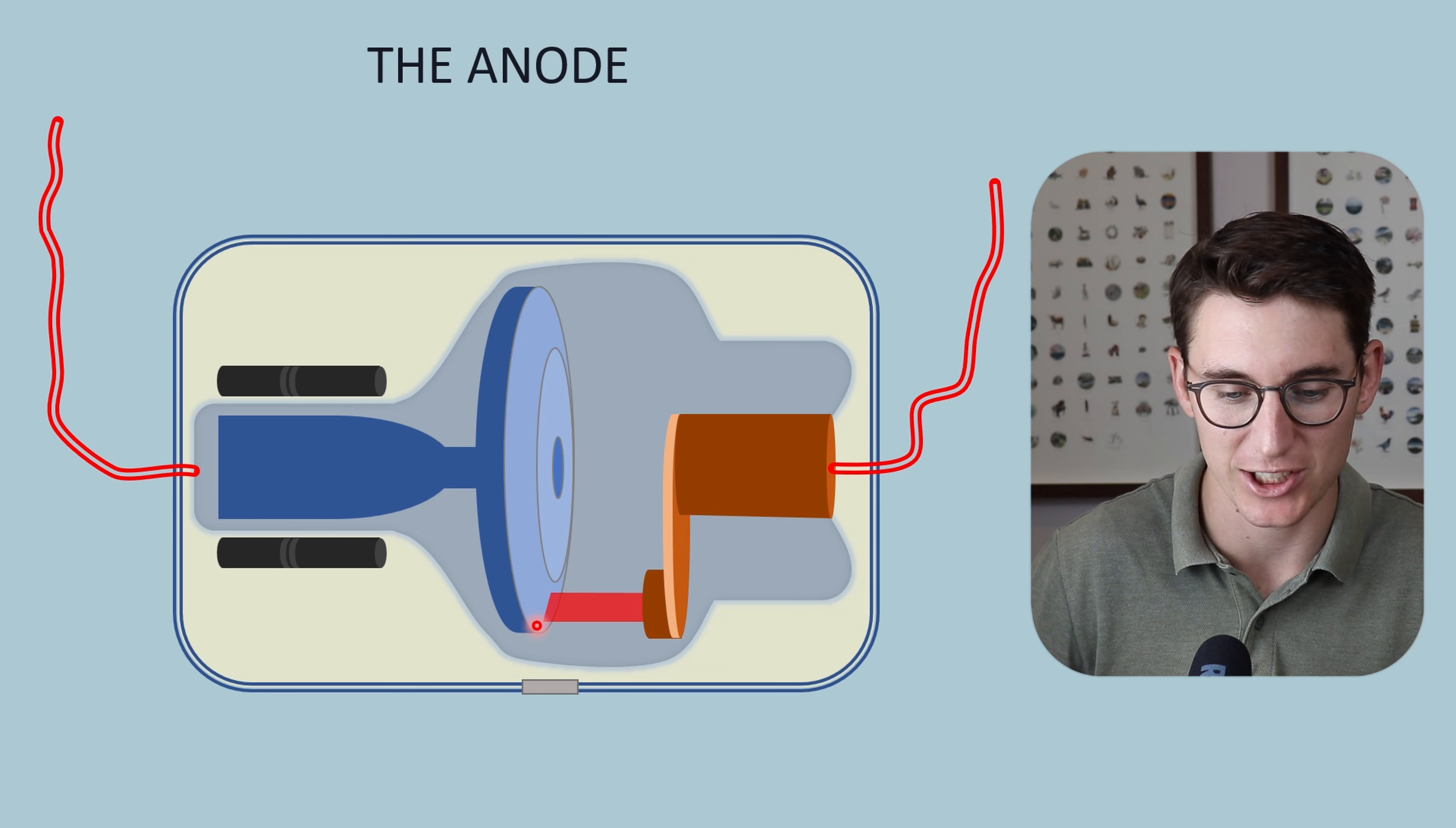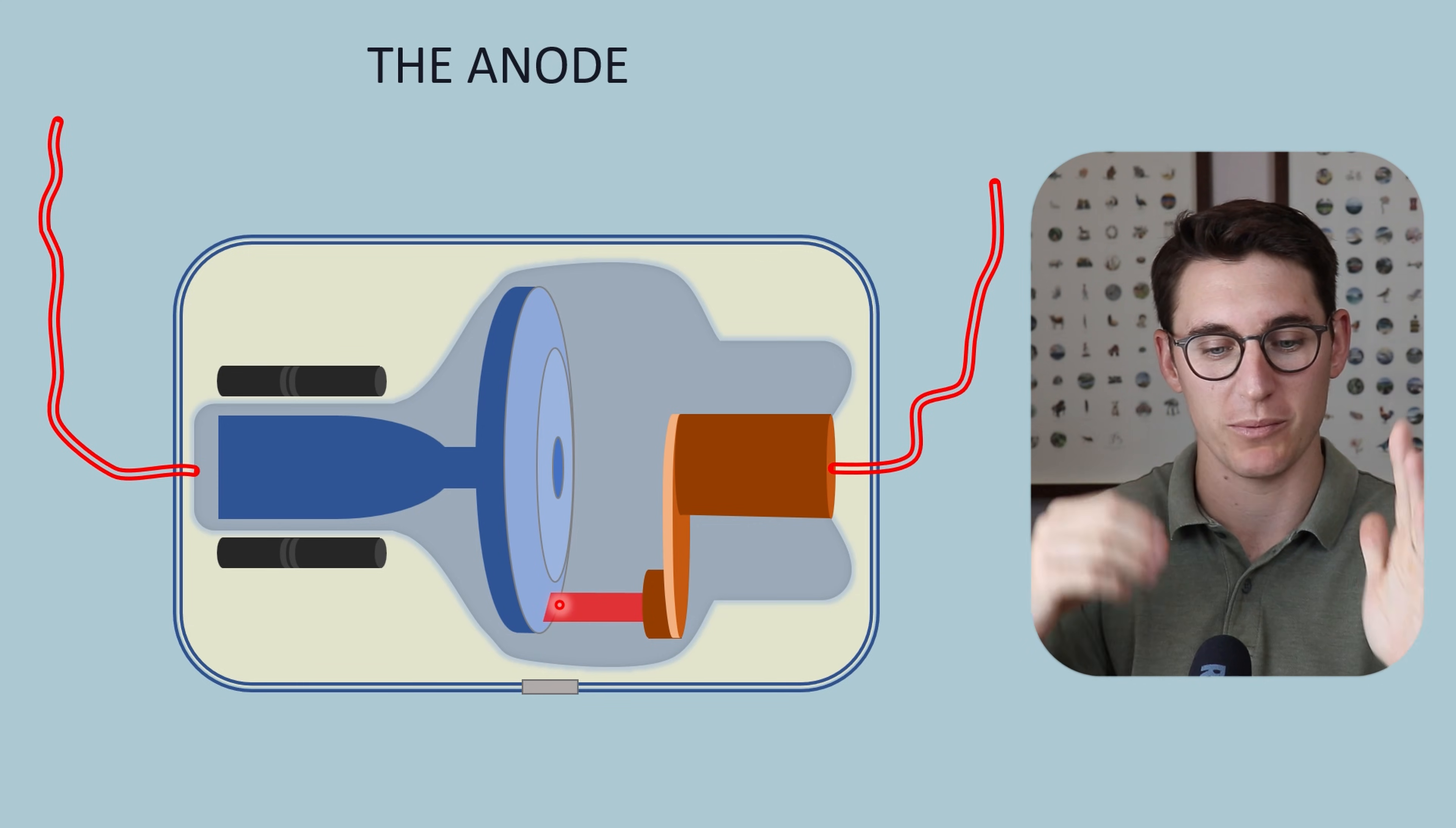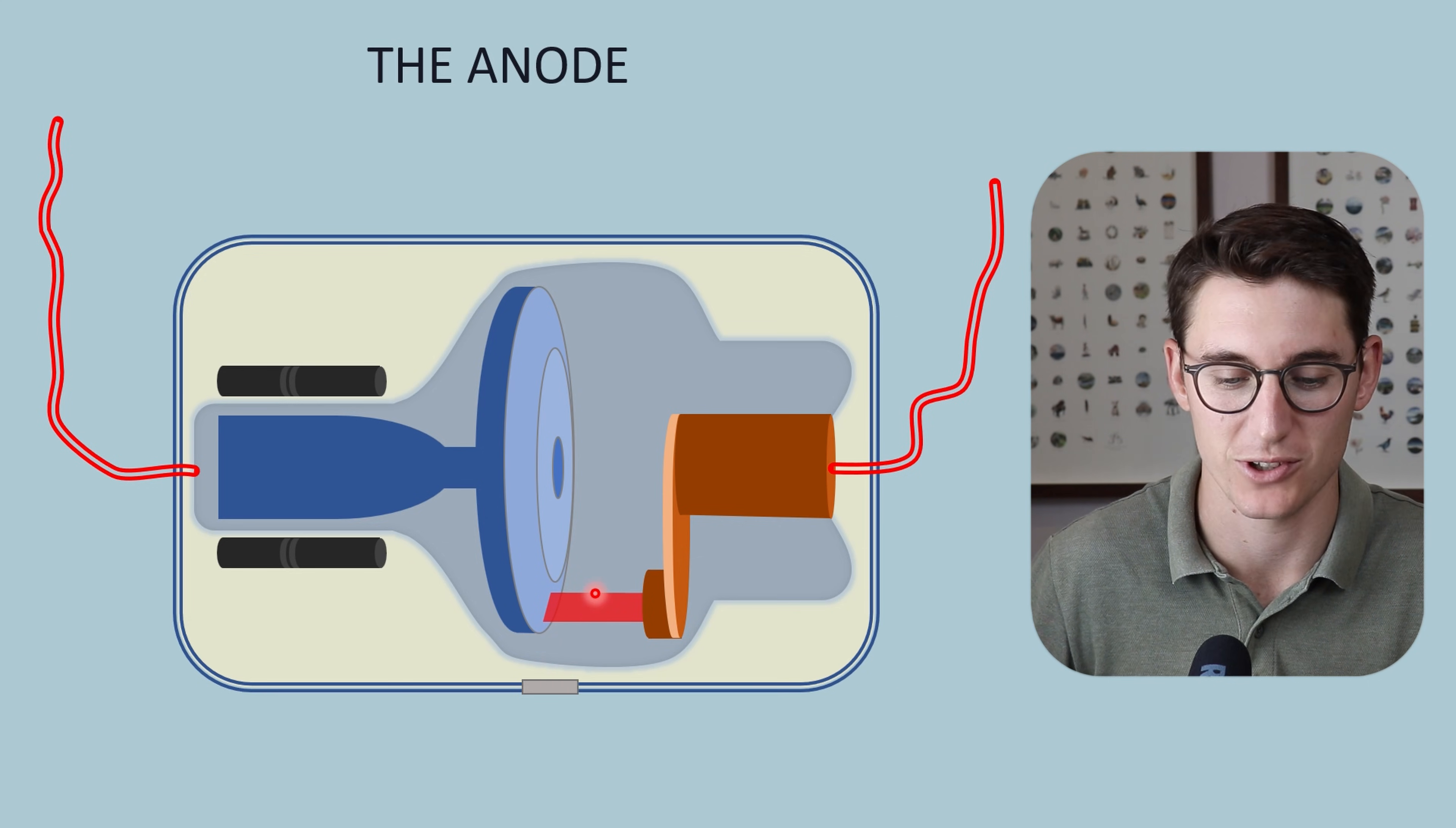This anode is actually angled slightly to allow x-rays to leave the x-ray tube perpendicular to this electron beam. If this anode was exactly flat with our electron beam, the geometry would work out such that we would have to have our patient at an angle, and this angle allows x-rays to leave the tube perpendicular to this x-ray stream.